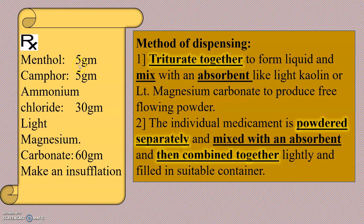That means: first triturate menthol, camphor, and ammonium chloride together; after triturating these three, a liquid will form; then by addition of light magnesium carbonate, it will produce a free-flowing powder. The second method is: the individual medicament is powdered separately, mixed with an absorbent, and then combined together lightly and filled in a suitable container.